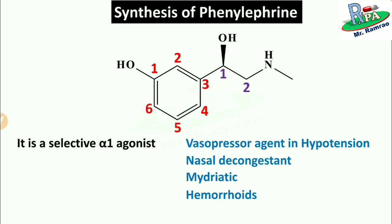Phenylephrine is also used to treat priapism — a persistent penile erection that continues hours beyond or in the absence of stimulation. Phenylephrine is diluted with normal saline and injected directly into the corpora cavernosa, causing constriction of blood vessels entering the penis, thus decreasing blood flow and relieving priapism. So the important uses of phenylephrine are: vasopressor agent in hypotension, nasal decongestant, mydriatic, treatment of hemorrhoids, and treatment of priapism.